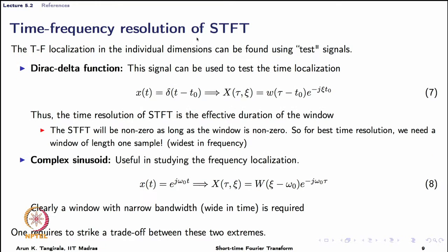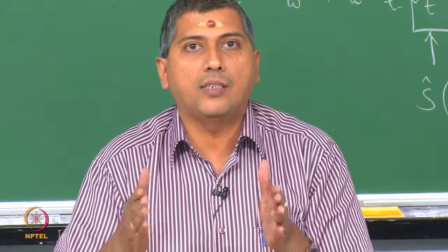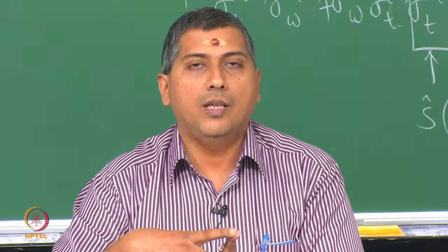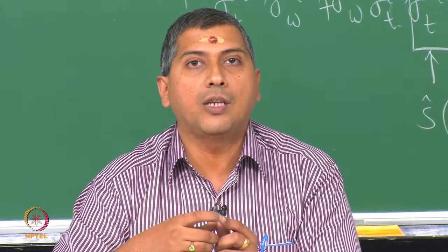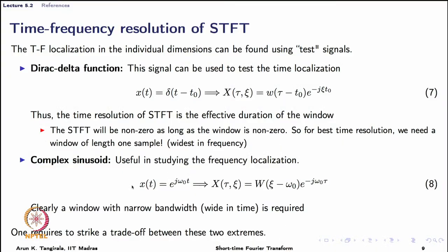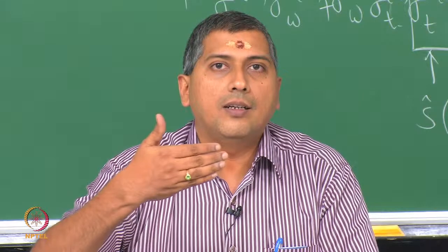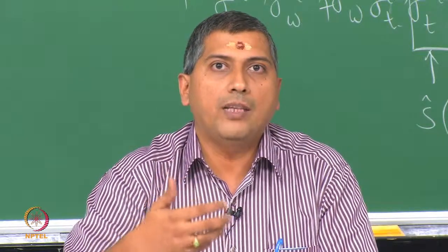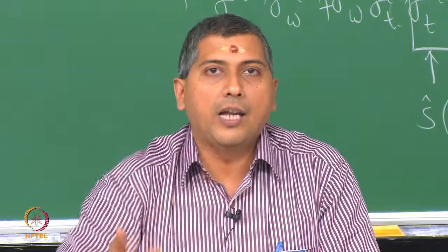The time-frequency resolution of the short time Fourier transform is fundamentally limited by the window: the time localization of the STFT is at best the width of the window, and the frequency localization cannot be finer than the spread of the window in frequency. The window limits your ability to see through the signal — it is like wearing colored glasses when looking at the signal.